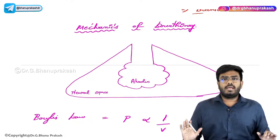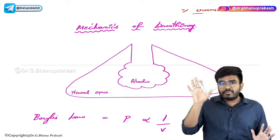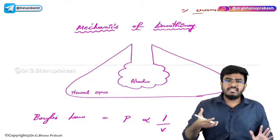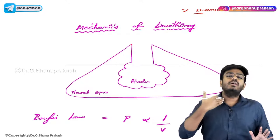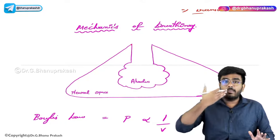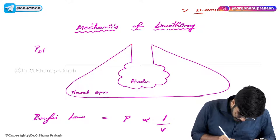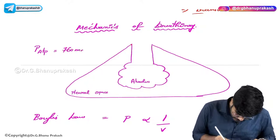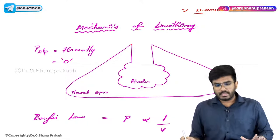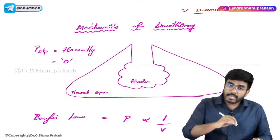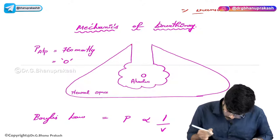During resting state, the pressure inside the alveolus — since atmospheric pressure of 760 mmHg is taken as zero and it communicates through the nostrils, trachea, and bronchi down to the alveolus — is also zero mmHg. Now, your alveoli are surrounded by pleura. The important point is that the pressure inside the pleura is always negative.